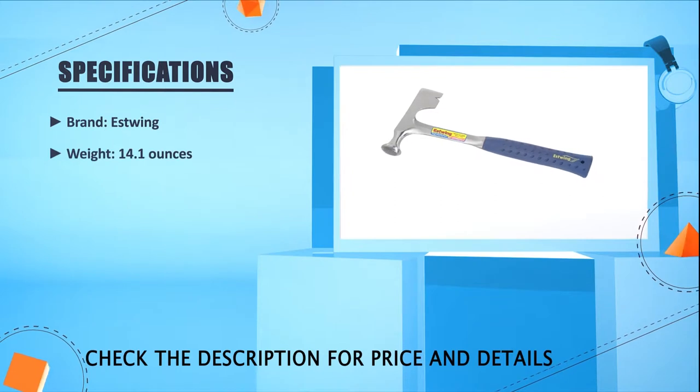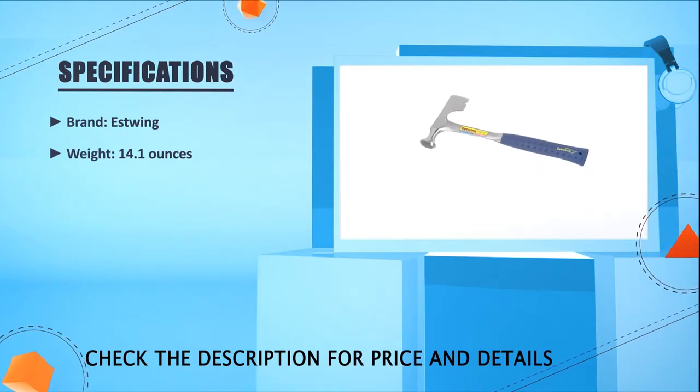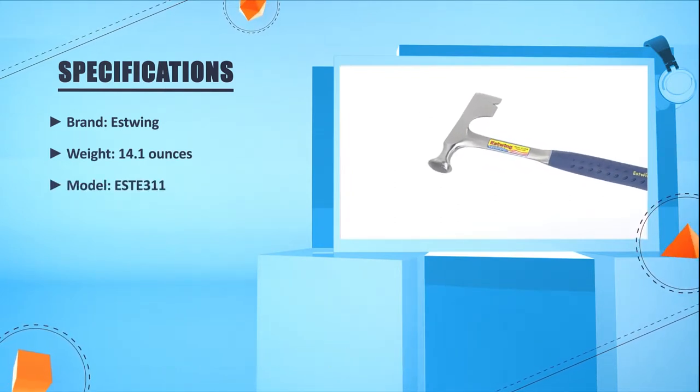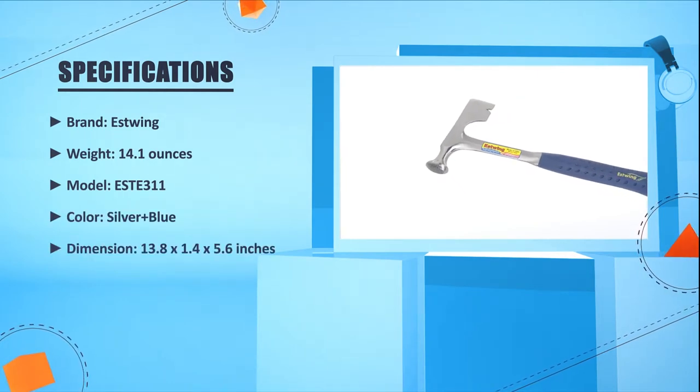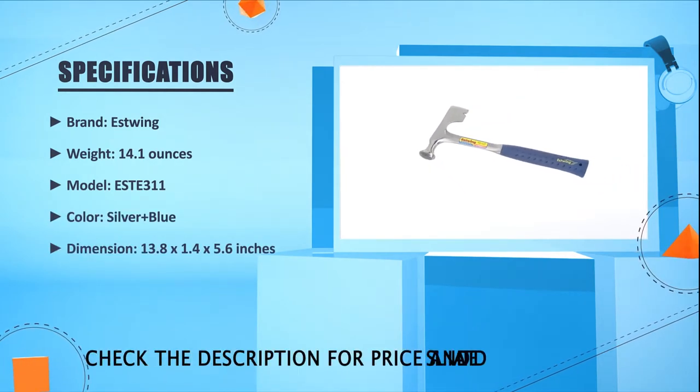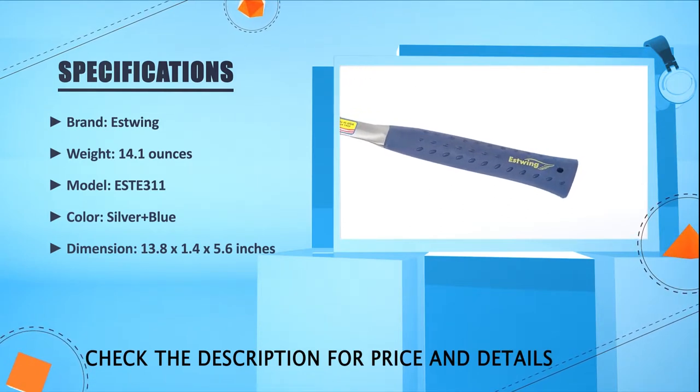Brand: Estwing, Weight: 14.1 ounces, Model: E-S-T-E-3-1-1, Color: Silver Plus Blue, Dimension: 13.8 x 1.4 x 5.6 inches.